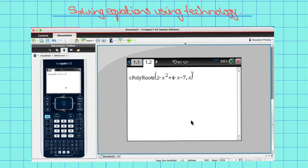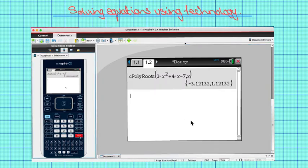Now press OK and you'll see calculate polyroots and your equation 2x squared plus 4x minus 7 for our variable x. Now press enter and it will show our two values.